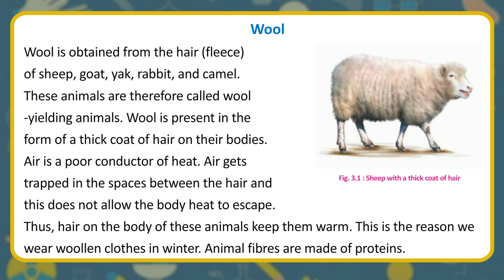Wool is obtained from the hair, or fleece, of sheep, goat, yak, rabbit, and camel. These animals are therefore called wool-yielding animals. Wool is present in the form of a thick coat of hair on their bodies.